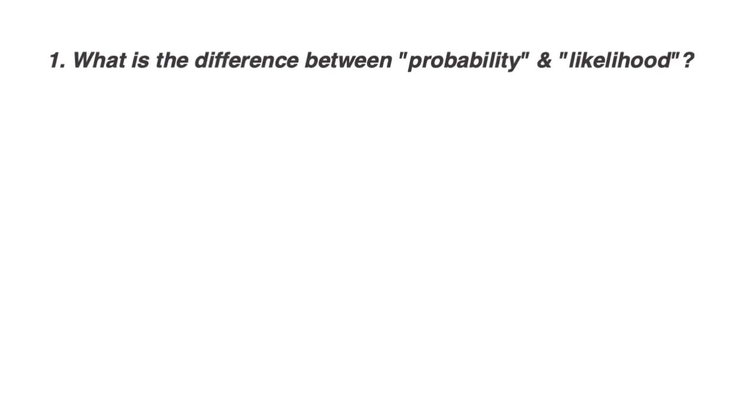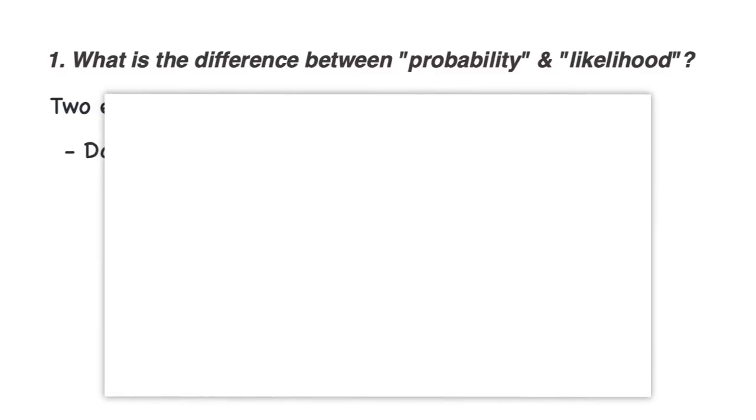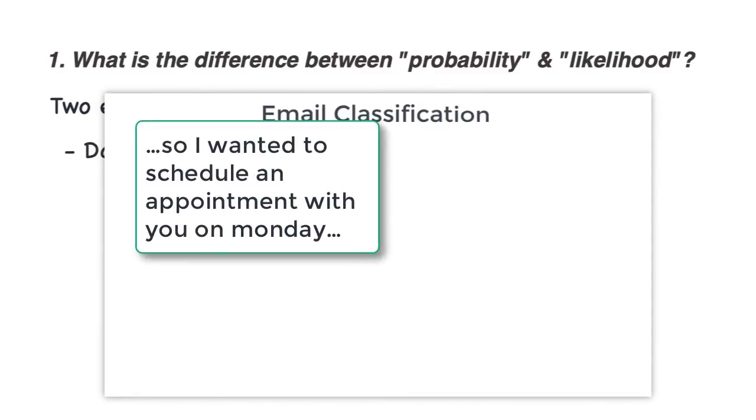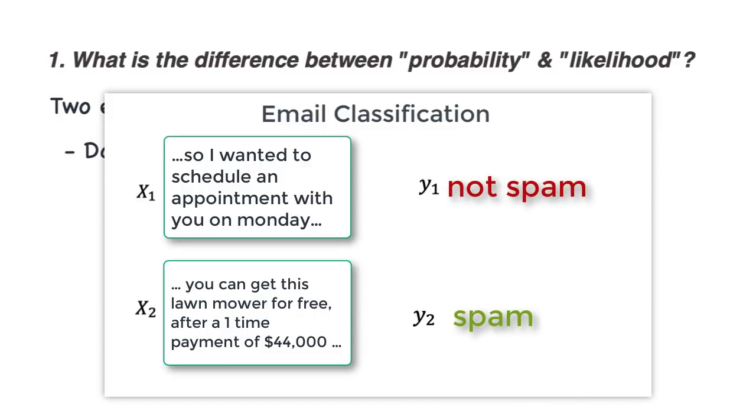What is the difference between probability and likelihood? Two entities involved here. Data, which is a set of observations D. D is a set of n samples with their corresponding labels. For example, in an email classifier to classify a given email as spam or not spam, X is an email and Y can be a binary label, spam or not spam.